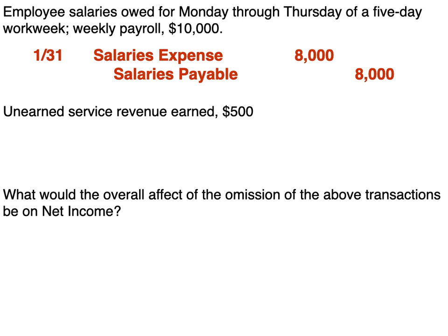The last adjusting entry: unearned service revenue earned of $500. Originally we received $500 in cash for something we had not done yet, which created a liability called unearned service revenue — we debited cash and credited unearned service revenue. Now we are earning that $500, so we no longer owe it. We debit the unearned service revenue account to reduce our liability, and since we are earning it, revenues go up with credits, so we credit service revenue.